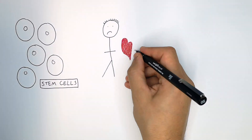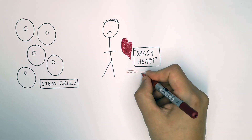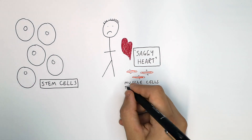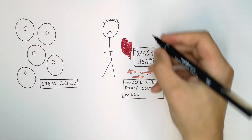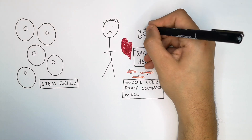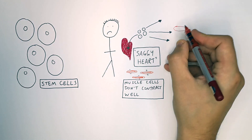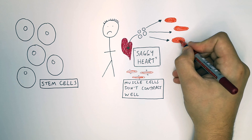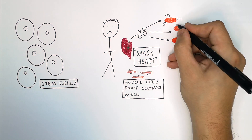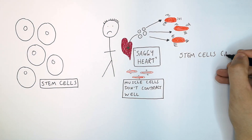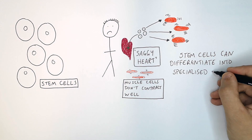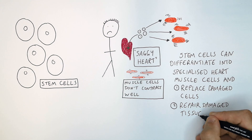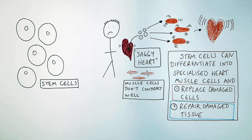Take the example of the saggy heart — where heart muscle cells do not contract properly. What we can do is get stem cells from the person's bone marrow and inject them into the person's heart. Hopefully these stem cells will differentiate into specialized heart muscle cells, replace the damaged cells, repair the damaged tissue, and allow the person's heart to be fully functional.